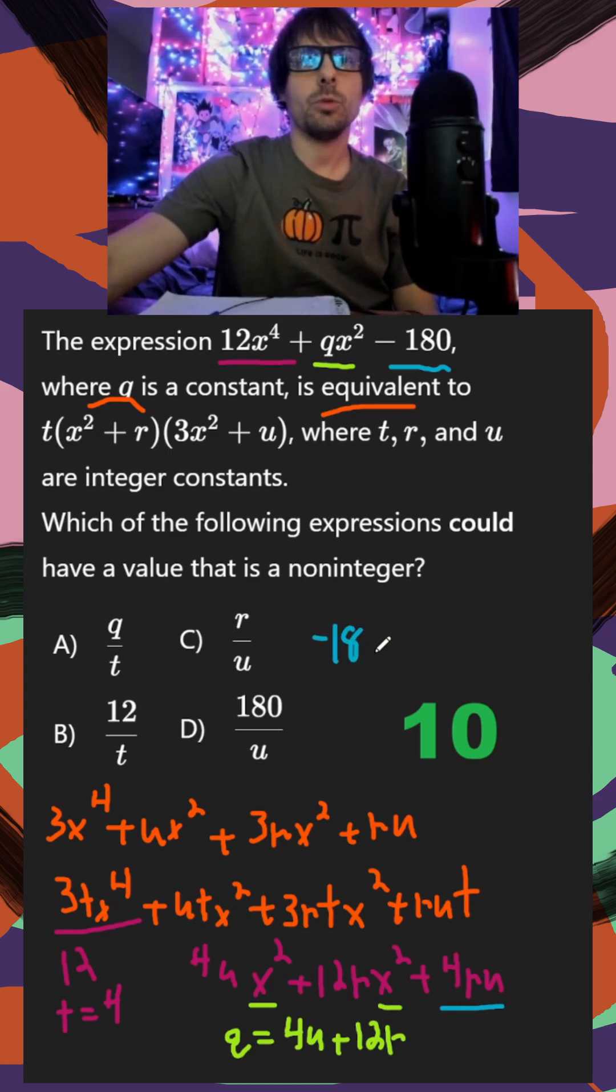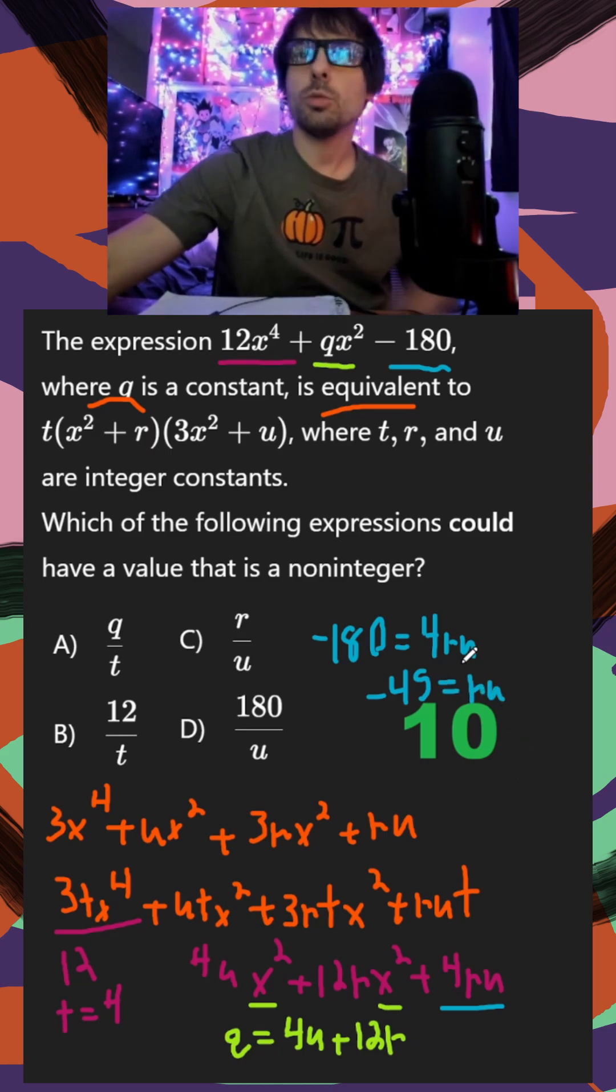So I'll do that up here. Negative 180 is equal to 4ru, or divide by 4, and I get negative 45 is equal to ru. So not too bad, we have everything expanded, we have our three terms.